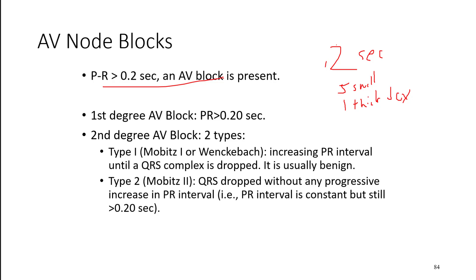A first-degree AV node block is simply that the PR interval is a little bit elongated. Everything else checks out — QRS complex is normal, P waves are normal, we still only have a single P wave. It's just that the PR interval is a little prolonged, because maybe there's some fibrosis or scarring causing signal to be slightly delayed moving from the SA node through the AV node down into the ventricles.